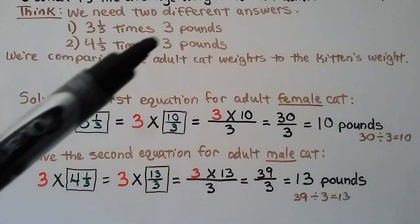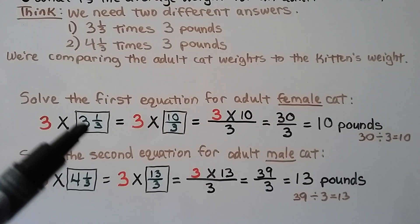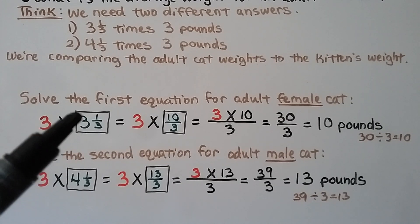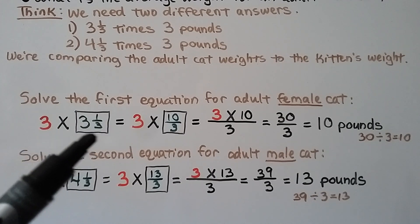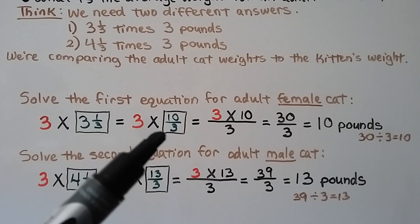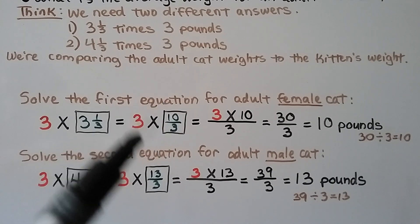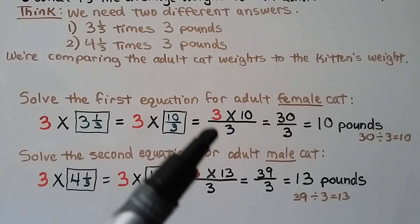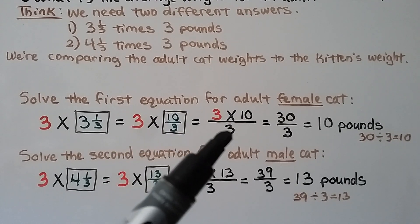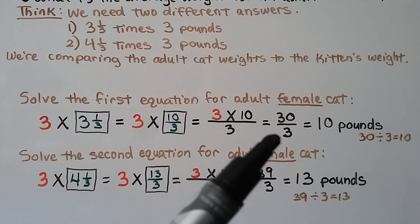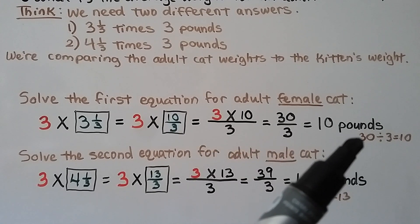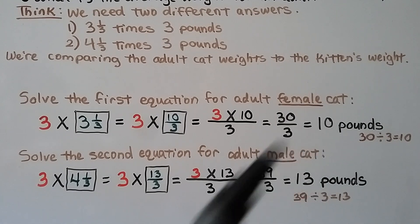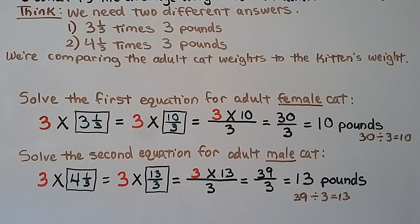For the adult female cat, we do 3 times 3 and 1 third. We write this mixed number as a fraction greater than 1: 3 times 3 plus 1 gives us 10 thirds. We multiply the whole number to the numerator: 3 times 10 over denominator 3 is 30 thirds. Using division to simplify: 30 divided by 3 equals 10. The average adult female cat is 10 pounds.